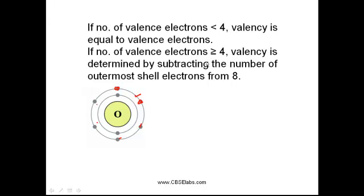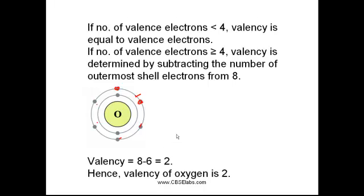Now, the valency can be found by subtracting the outermost shell electrons, that is 6, from 8. So, 8 minus 6 equals 2. Hence, we can say that the valency of oxygen is 2.